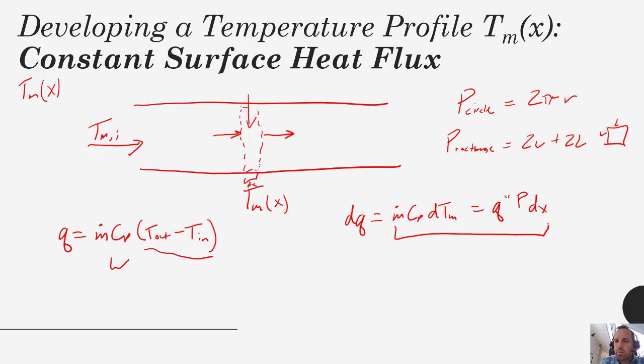From here, if we look at this part of the equation, this actually is a differential equation that we can just integrate. Let's go ahead and work on integrating that. First we're going to rearrange it. So if we rearrange it, we get dt_m equals the flux times the perimeter times dx divided by m dot c sub p.